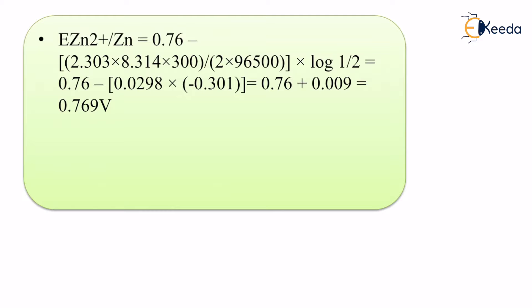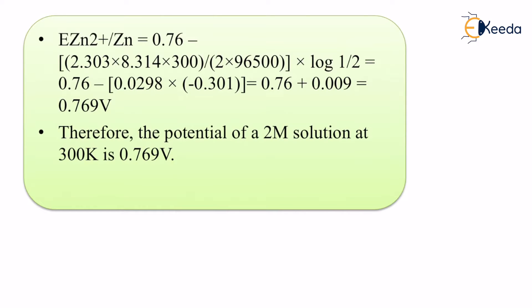n = 2 and F = 96500. Multiplying 2.303 × 8.314 × 300 and dividing by 2 × 96500, the entire calculation gives us 0.769 volts. Therefore, the potential of a 2 molar zinc solution at 300 K is 0.769 volts.